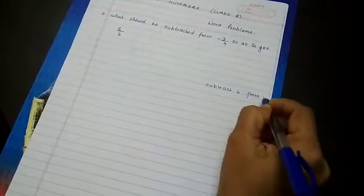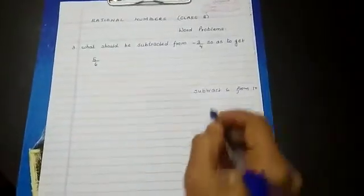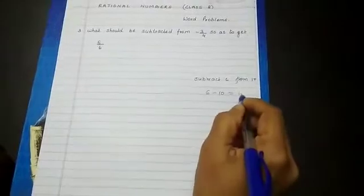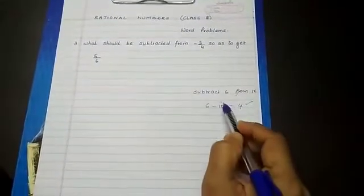Suppose the sum is subtract 6 from 10. What do children mostly do? 6 from 10, subtract 6 from 10. Now here though the answer is right, the method is wrong.